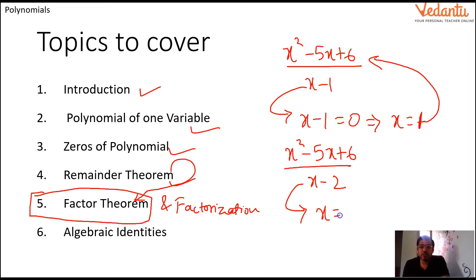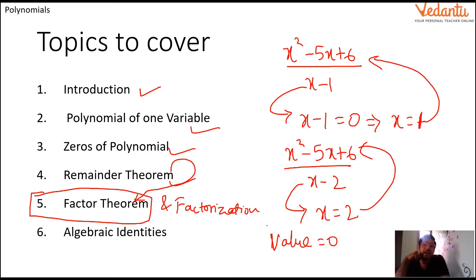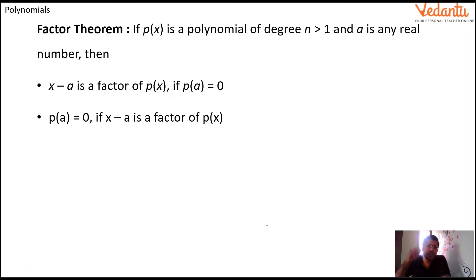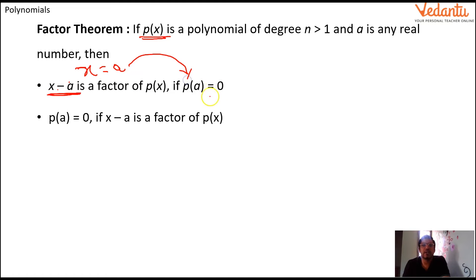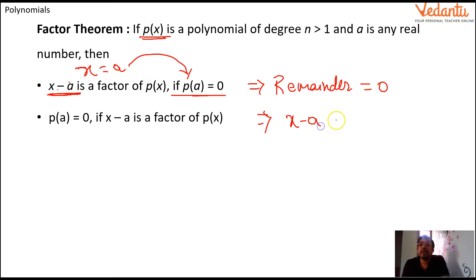To get the remainder I put x = 2 into the polynomial. Say for example when I put it in and I get the value equal to 0, that means the remainder is 0. Now if I generalize: if I divide any polynomial p(x) by x - a, I put the zero of that polynomial, x = a, into the dividend. When I put x = a and get 0, this means remainder equals 0, which means x - a divides p(x).